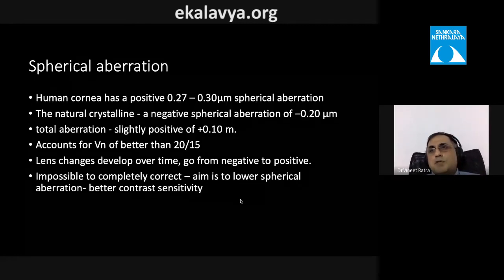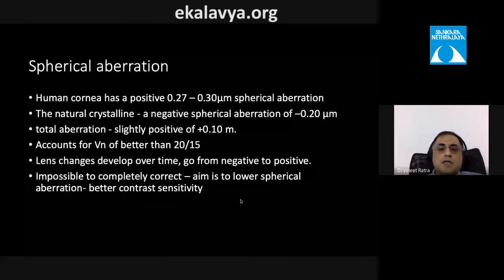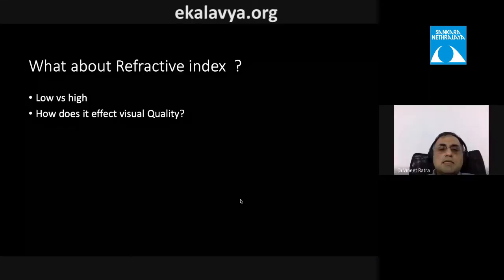This slight positive total spherical aberration explains why the healthy pseudophakic eye can achieve vision better than 20/20. Over time the crystalline lens changes — spherical aberration shifts. It is important not to eliminate all spherical aberration; the goal is to reduce it slightly, which optimizes contrast sensitivity.